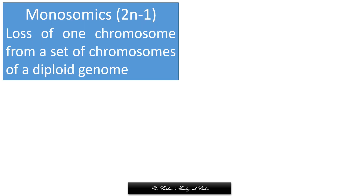Aneuploidy are of different types. First, monosomics, represented as 2n-1. This condition arises by the loss of one chromosome from a set of chromosomes of a diploid genome, so that particular chromosome is represented singly whereas others are in duplicate.